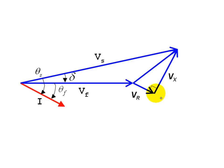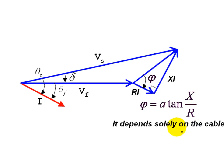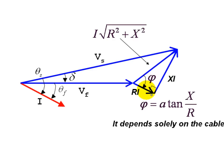We label this angle of the cable triangle phi. Vr equals R times I, and the magnitude of Vx is X times I. Therefore, phi is the arctangent of X over R. It depends exclusively on the cable — not on the current, not on the source, and not on the load. That is why I call this little right triangle the cable triangle. Its shape depends on the cable, but its size depends on the current, since all its sides have I as a factor.